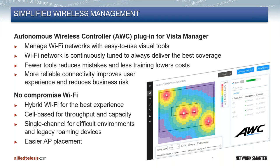Single channel is very good for challenging radio environments where there's a lot of interference or lack of spare channels, and it gives you much greater choice in access point placement and density because there is no co-channel interference. Combined, the hybrid Wi-Fi gives you the best of both technologies, AWC simplifies the wireless management, and together we give you both reliability and easy management — that's our wireless automation story.